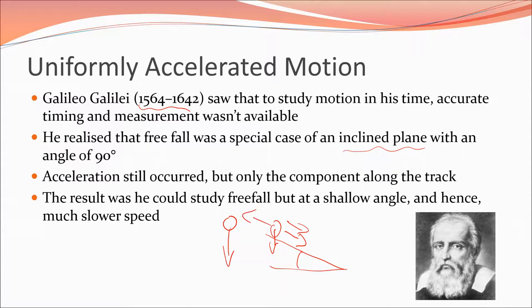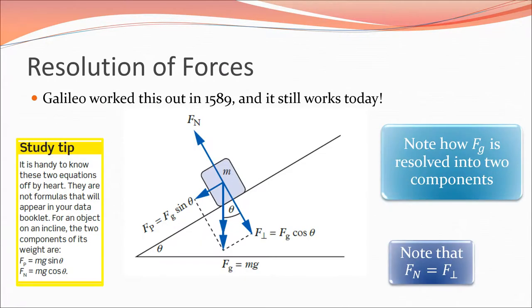Using an inclined plane was basically a way of getting around the fact that the instruments he had at the time to measure free fall just were not good enough. This is what he worked out in 1589 and we still do it today.